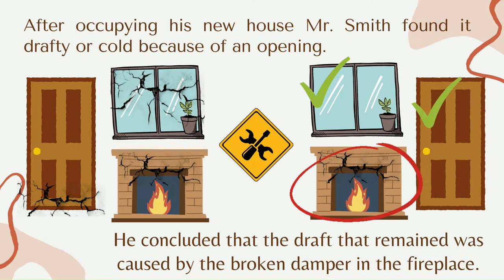For example, after occupying his new house, Mr. Smith found a draft. He traced the source of the draft to three conditions: a broken window in the garage, a crack under the front door, and a broken damper in the fireplace. When the window was replaced, he noticed an improvement, and a further improvement when weather stripping was installed on the door. He then concluded that the draft that remained was caused by the broken damper in the fireplace — the remaining unresolved cause is the residue.